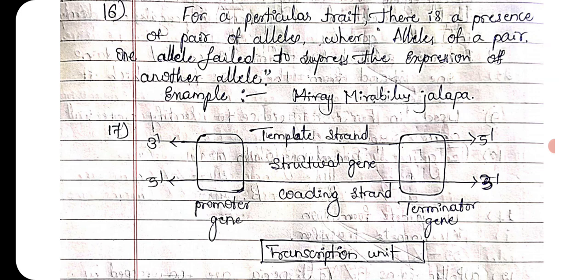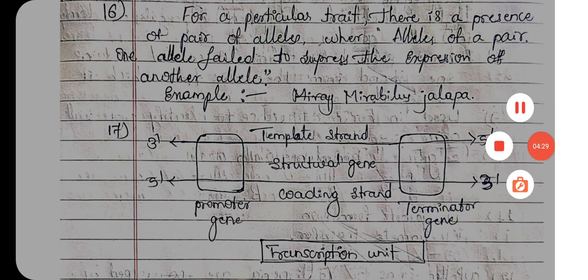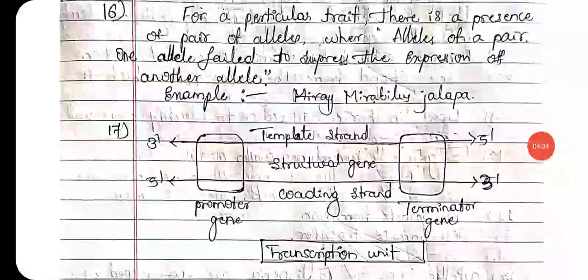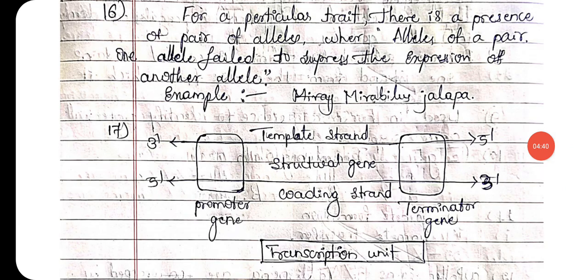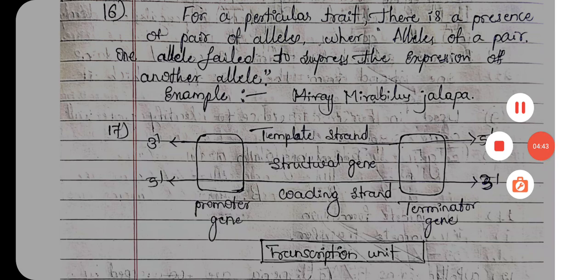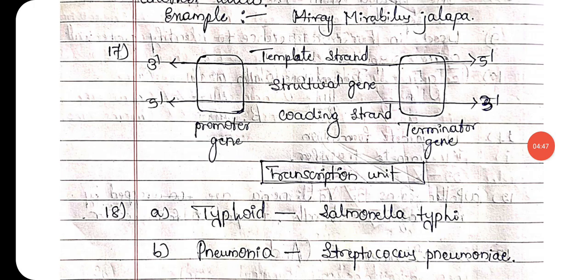Incomplete dominance: for a particular trait, when a pair of alleles is present and one allele fails to suppress the expression of another allele, it is known as incomplete dominance — where alleles fail to suppress the character of the other allele. An example is Mirabilis jalapa, also known as the four o'clock plant.